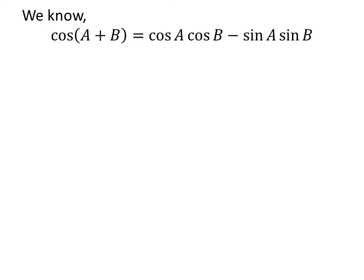As we know, the trigonometry identity cosine of a plus b is equal to cosine of a times cosine of b minus sine of a times sine of b.